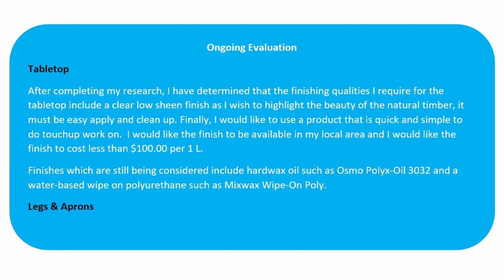Finally, we are back up to the ongoing evaluation. It is important to break down finishes into their various sections. For example, I might be using a hard wax oil on my tabletop but painting my legs — this was very popular in dining tables around 2015. If you plan to use various finishes on different sections of the project, please make sure to state that in this ongoing evaluation.